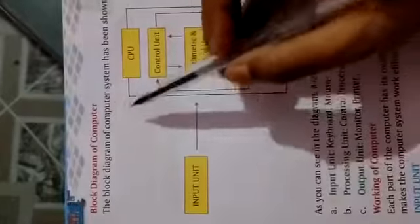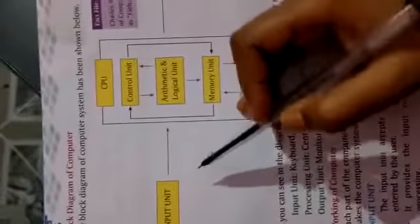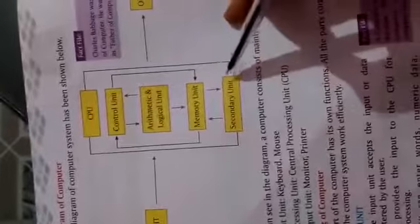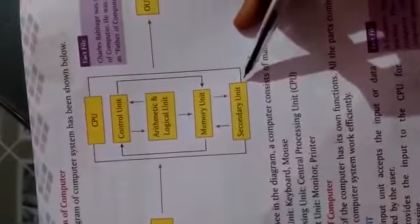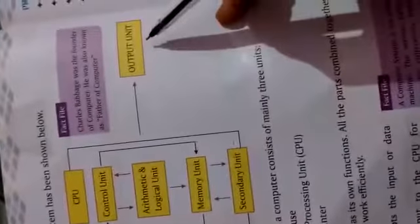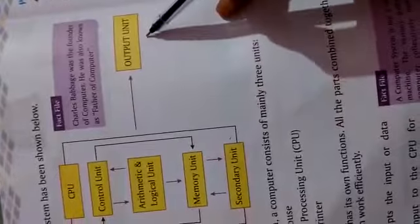Next is block diagram of computer. Block diagram ke through hum working samjhenge ki computer work kaise karta hai. Computer mainly works in three parts: first is input unit, second is processing unit, and the third is output unit. Input unit ke through hum data enter karte hain, processing ke through jo bhi hum data enter karte hain uski processing hoti hai, aur output unit ke through processed data aapko milta hai.